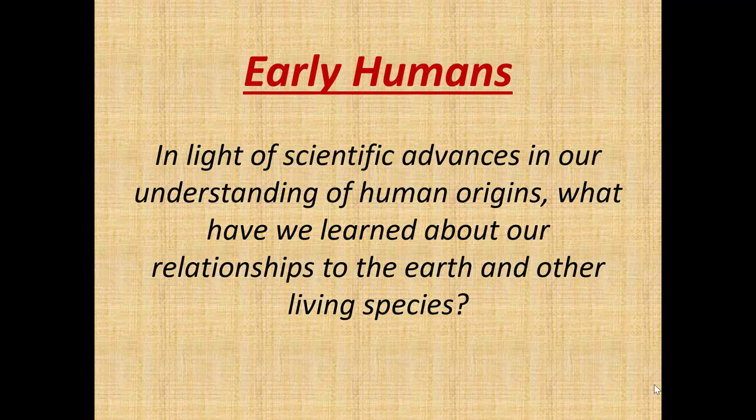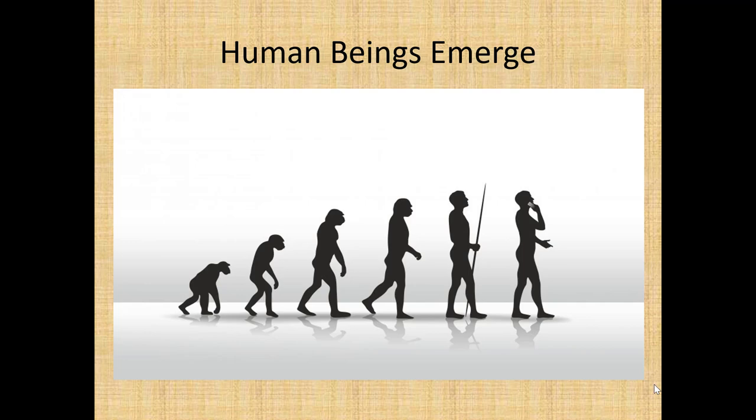The first section in your chapter is entitled Early Humans. The question your textbook asks is: in light of scientific advances in our understanding of human origins, what have we learned about our relationships to the Earth and other living species? We're truly starting at the very beginning of humanity — when humans emerge, they go from hunter-gatherers foraging every day for food, and over time evolve into staying put with agriculture.